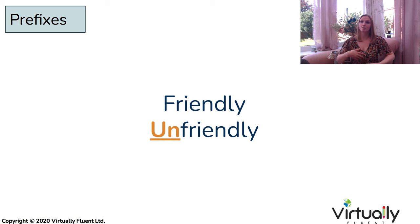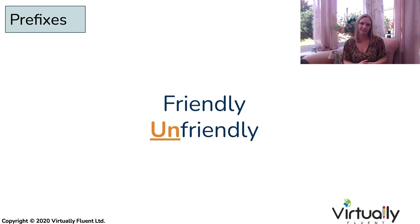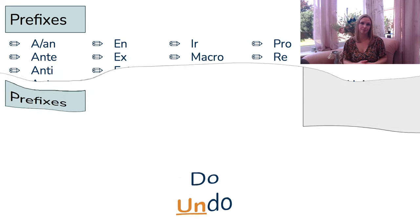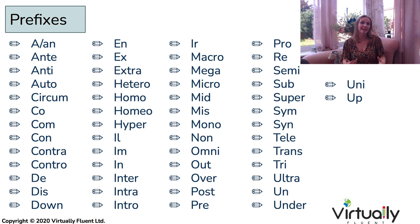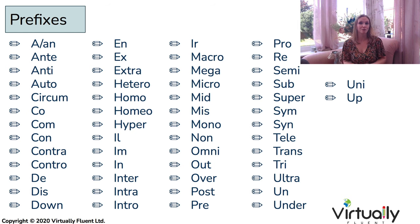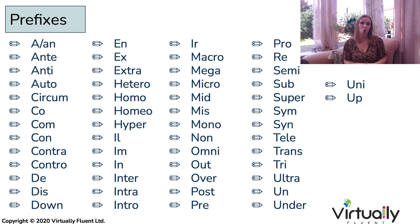Let's take another example: friendly becomes unfriendly — again, this is a negative prefix — or do becomes undo. But it's not just 'un' as a prefix. There are plenty of different combinations of letters to create prefixes. You can see a list here. If you would like a more extensive list or examples of root words which can be used with each of these prefixes, you can find that in our word formation course. I've left the link to that in the description below.